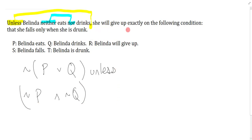She will give up exactly on the following condition—well, exactly on the following condition, that's just fancy talk for a biconditional. So we just identify the stylistic variants and put them in. Belinda gives up is R, and the condition is she falls only when she is drunk.